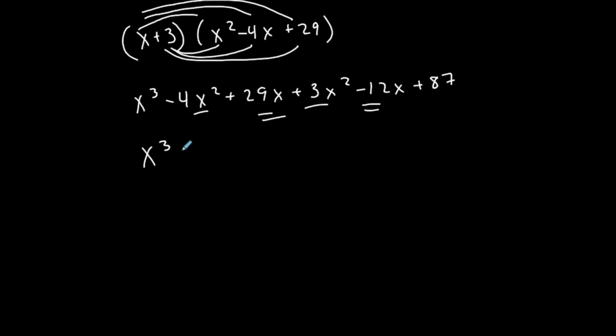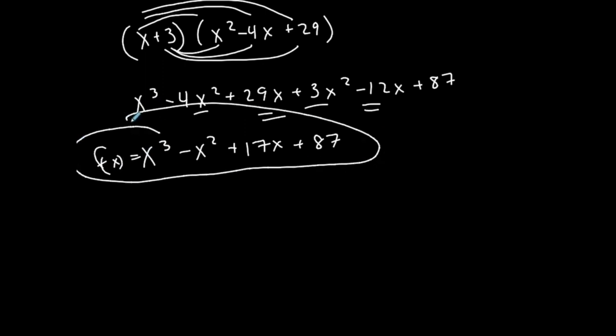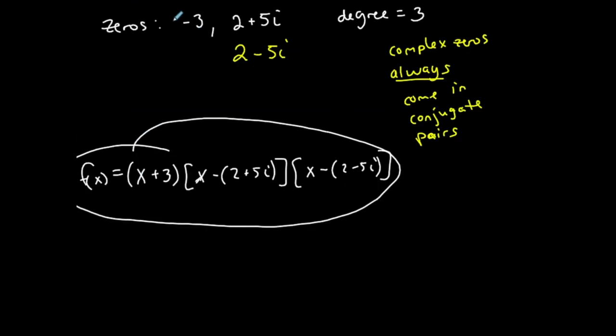Combine like terms: x to the third, so minus 4x squared plus 3x squared is minus x squared, positive 29x minus 12x is positive 17x, and then plus 87 is my final function in polynomial form, such that negative 3 is a zero and 2 plus 5i and 2 minus 5i are complex zeros.